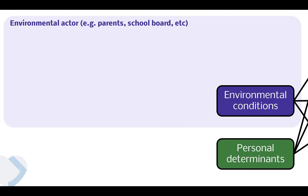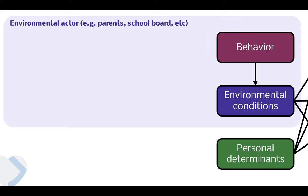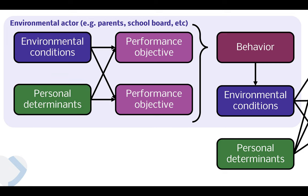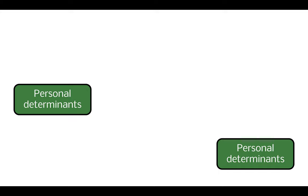Environmental conditions are controlled by environmental actors, which — until the singularity when AI takes over — are just humans. So how people's environments look is a consequence of the behavior of other people. Those behaviors consist of performance objectives predicted by environmental conditions and personal determinants. It's basically the same process, and those environmental conditions of politicians or managers are again determined by other environmental actors, and so on. In the end, it's all about personal determinants — when we can change personal determinants, we can change everything.